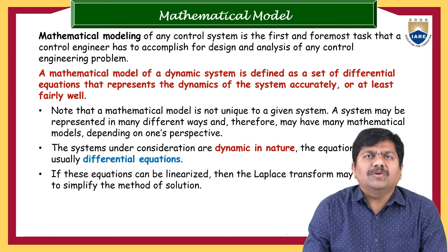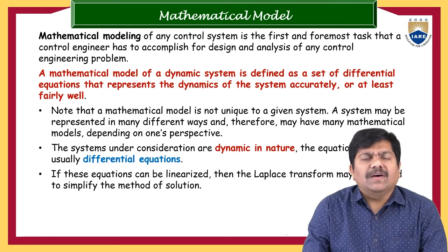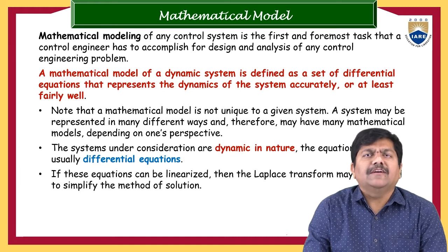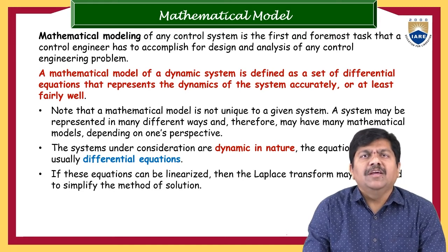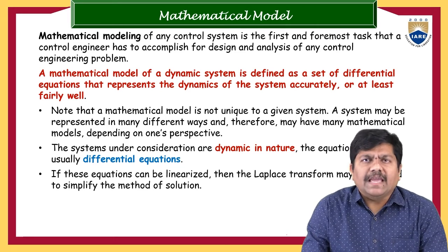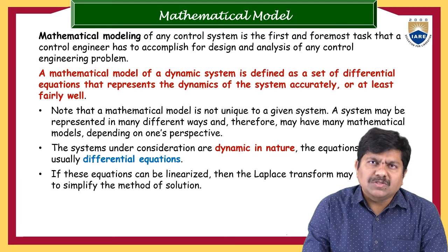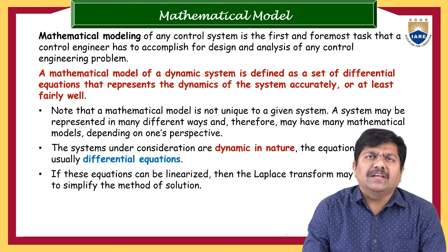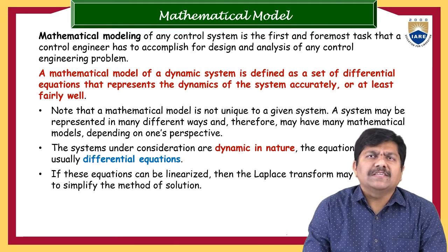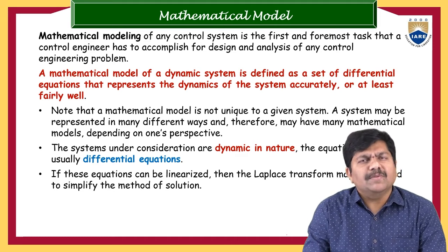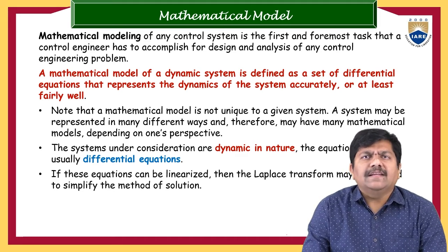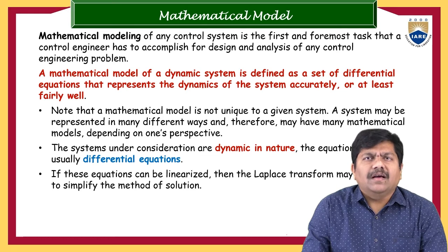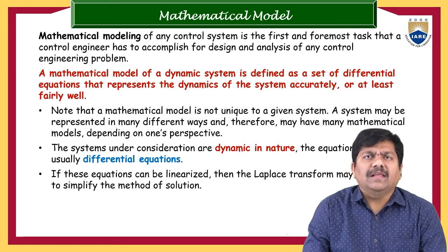Once the mathematical expression associated with a particular component is known to us, you need not bother about the characteristics of that particular system or the basic laws associated with it. Once that mathematical expression is known, you need not bother about the actual system type — whether it is mechanical, chemical, or a combination of various systems. That is the main intention and use of mathematical modeling.